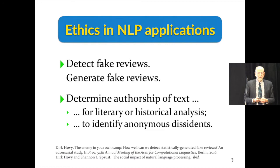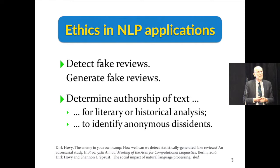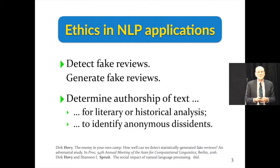There are many obvious ways that we can use natural language processing for good, or the same techniques for evil. For example, natural language processing can be used to detect fake reviews, but it can also be used to generate those fake reviews in the first place. Authorship attribution techniques can be used in historical and literary analysis to determine who wrote some historically important text for which we don't know the author, but the same techniques can be used to out political dissidents who might better remain anonymous.